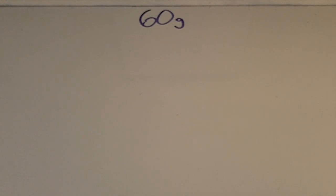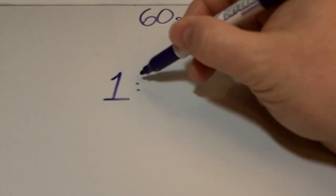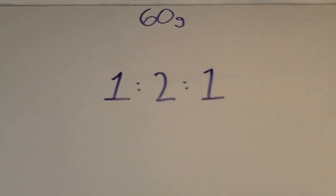What does matter most is basically two things. The first one is that we want a desired mass of 60 grams when we're done. And then the other important factor is that it's going to be a 1 to 2 to 1 ratio.